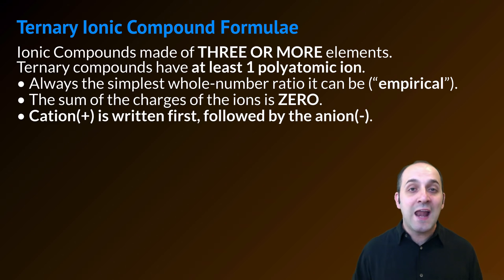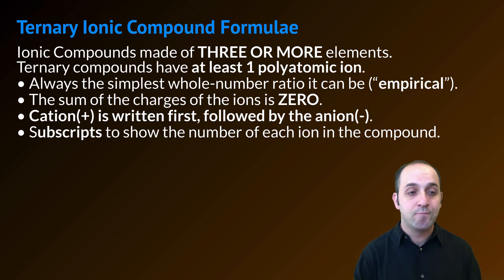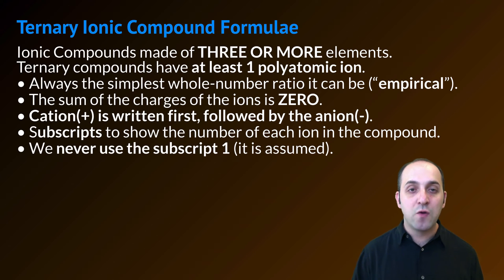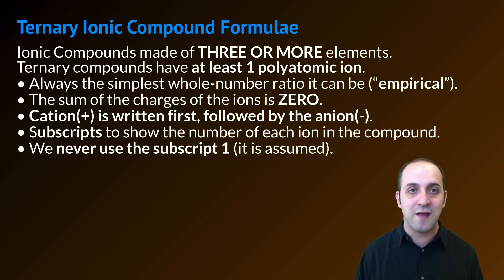The cation, or the positive ion, is going to be written first, followed by the anion or the negative ion. We're going to use subscripts to show the numbers of each ion in the compound, and we're still never going to use the subscript one — it's just basically assumed that it is there.